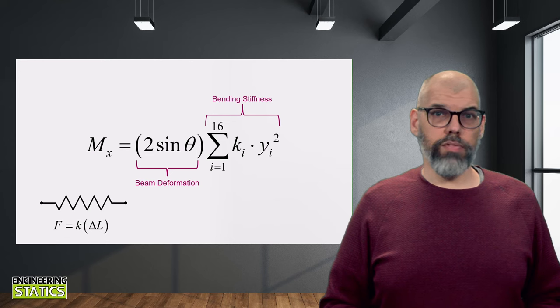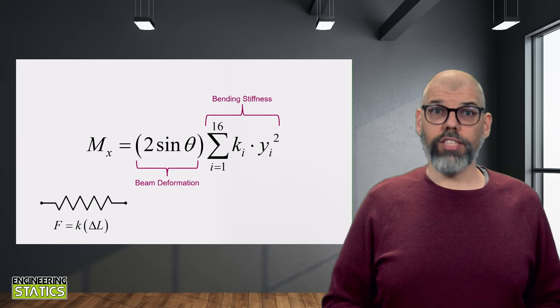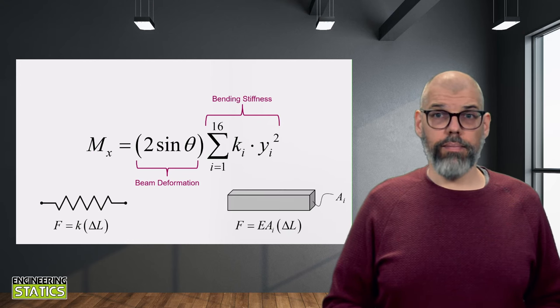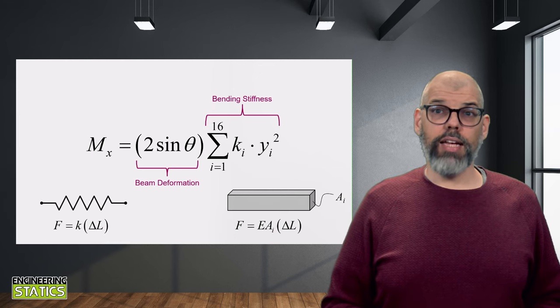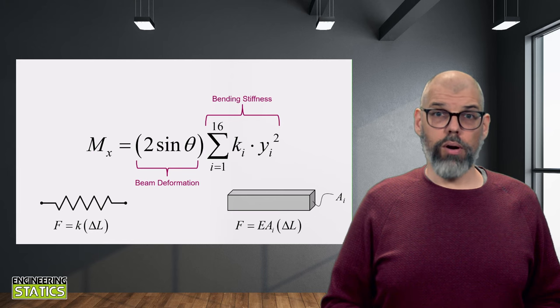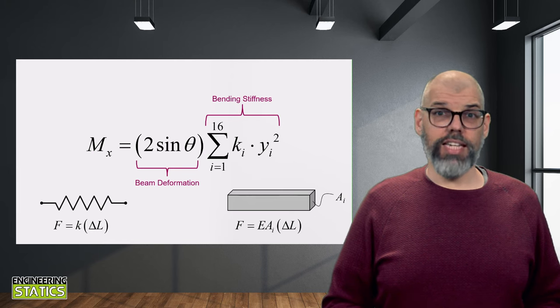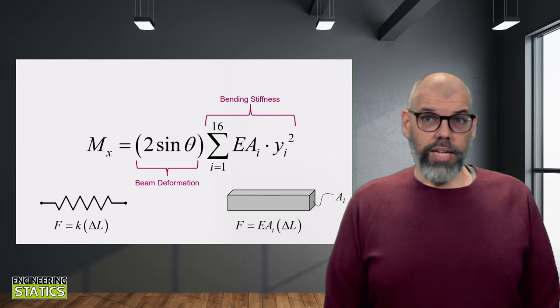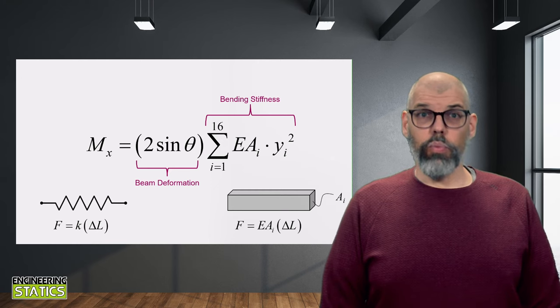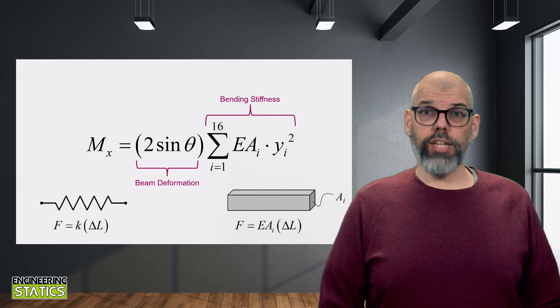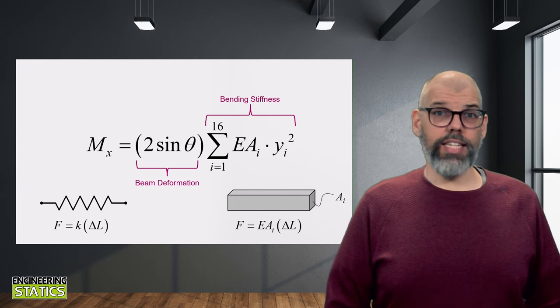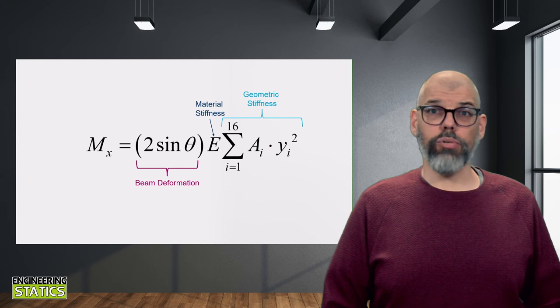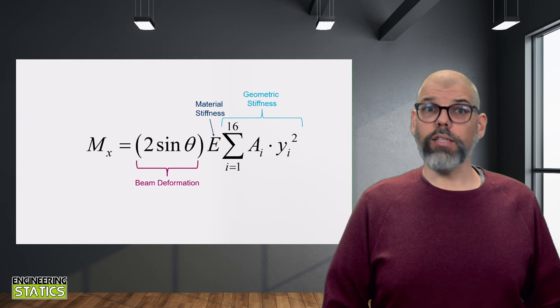The problem with our simplified model is that the beam is not actually made of springs that have a stiffness k, but of smaller blocks of material with a cross-sectional area ai. As a result, rather than the spring stiffness k, we should use the stiffness of an axial bar, which is given by the material stiffness e multiplied by the cross-sectional area of the bar. Replacing k with ea, we obtain the following expression. We can further simplify this by recognizing that the beam is made out of a single type of material, thus the material stiffness e can be taken out of the summation. This effectively divides the bending stiffness into a term dependent on the material properties and a term dependent on the geometric properties.